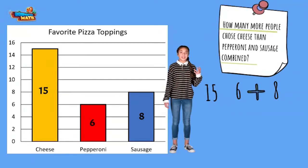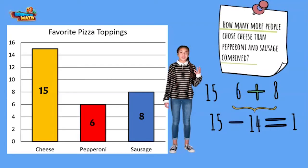6 plus 8 equals 14. But wait — we are not done. We have to figure out how many more people chose cheese than the other two combined. We subtract: 15 minus 14, and get an answer of 1. One more person chose cheese than sausage and pepperoni combined.